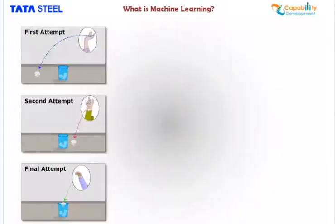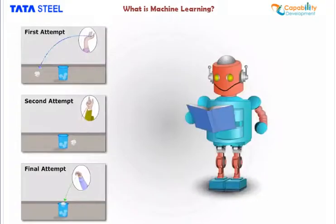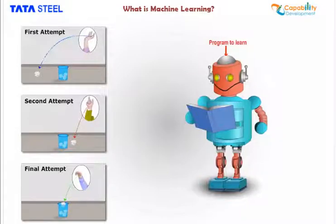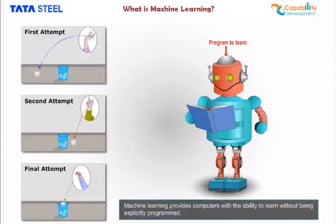You can do something similar with machines too. You can program a machine to learn from every attempt, experience, or data point and thereby improve the outcome. By definition, machine learning provides computers with the ability to learn without being explicitly programmed.